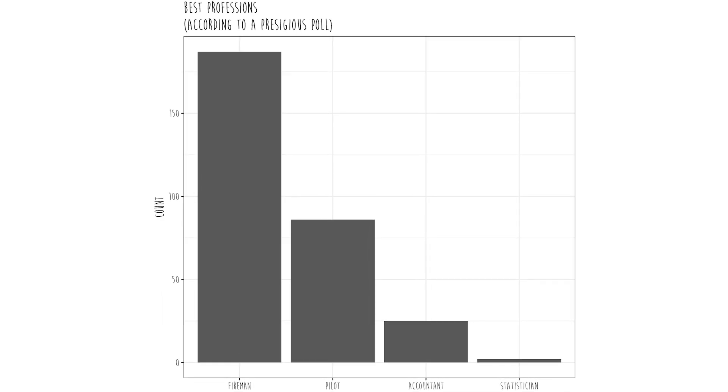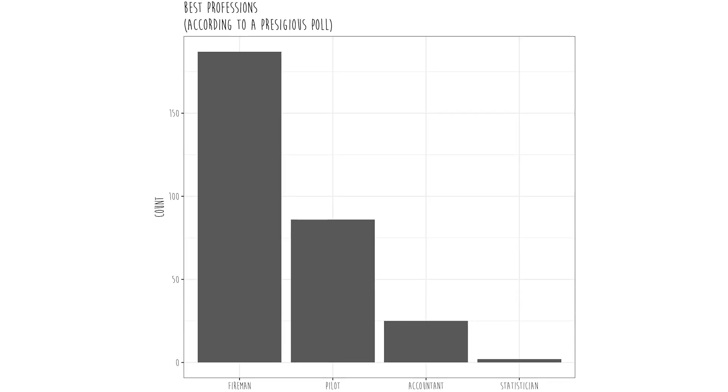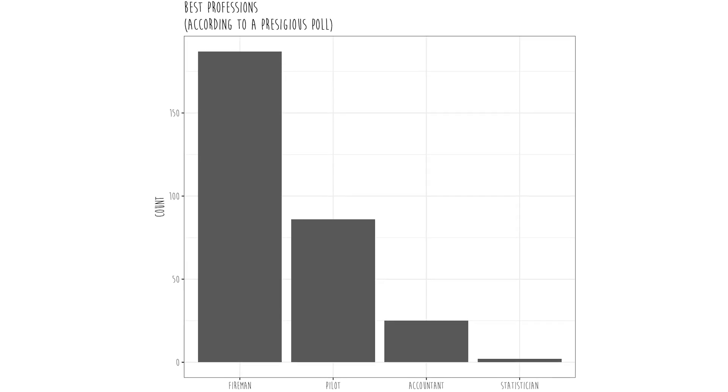This 'best profession' graph, according to a prestigious poll, asks people what they want to be and gives them four options: fireman, pilot, accountant, or statistician. The most people in the sample reported they wanted to be a fireman — about 175 or so — then pilot, then accountant, then statistician. We statisticians, we have it so bad. That's an example where the data behave as you would expect. We're a funky bunch — statisticians are people who didn't have enough personality to be accountants.